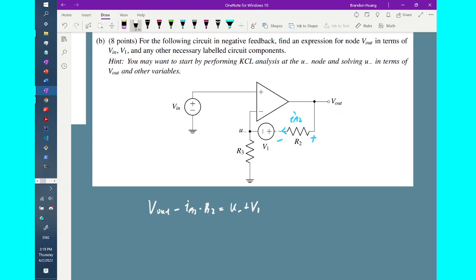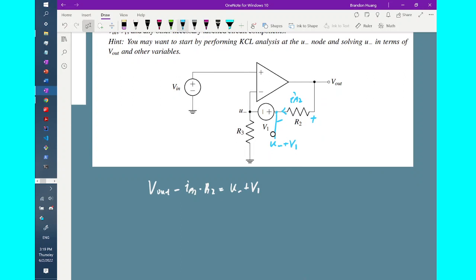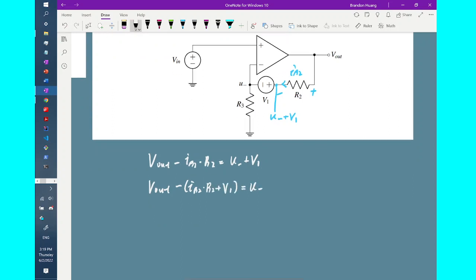So I will be able to say that V_out minus i_R2 times R2 is equal to U_- plus V_1, because this node is having the node voltage of U_- plus V_1. So knowing that, I could have also subtracted both sides of the equation by V_1. So V_out minus i_R2 times R2 minus V_1 is equal to U_-.